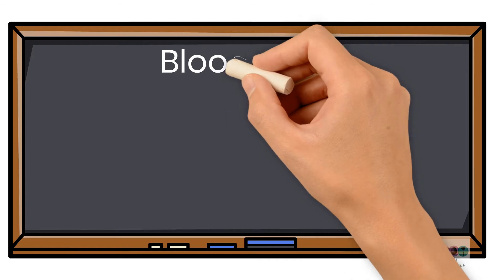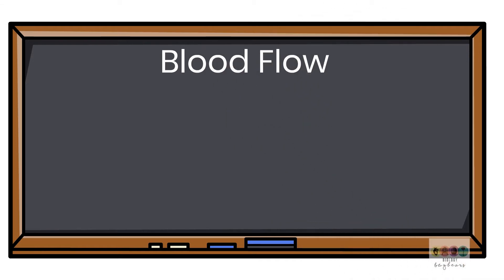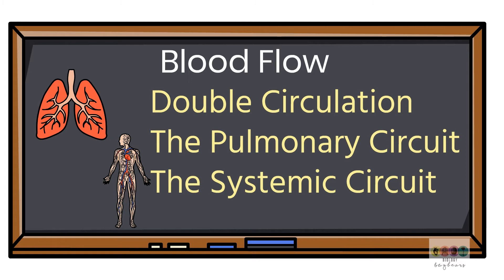So when you know the structure of the heart really well, go on to blood flow. Know what is meant by double circulation, the pulmonary and the systemic circuits. Where is the blood going to?